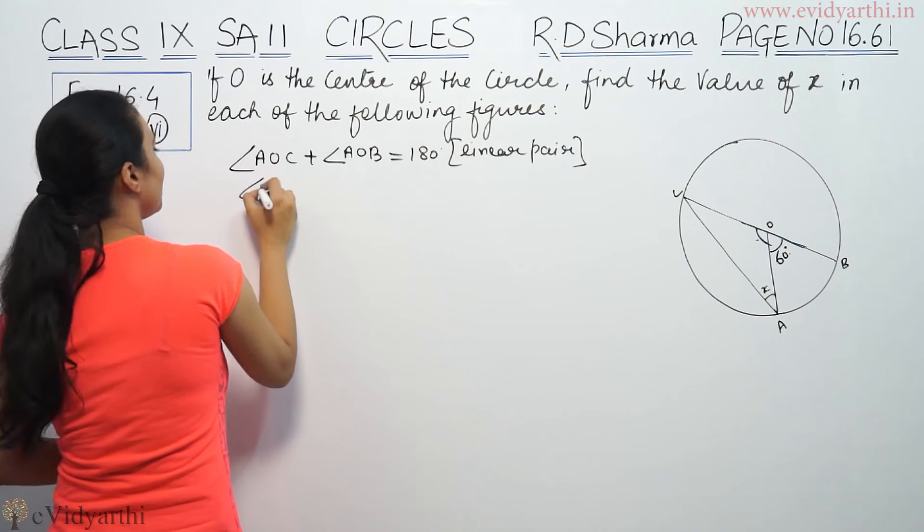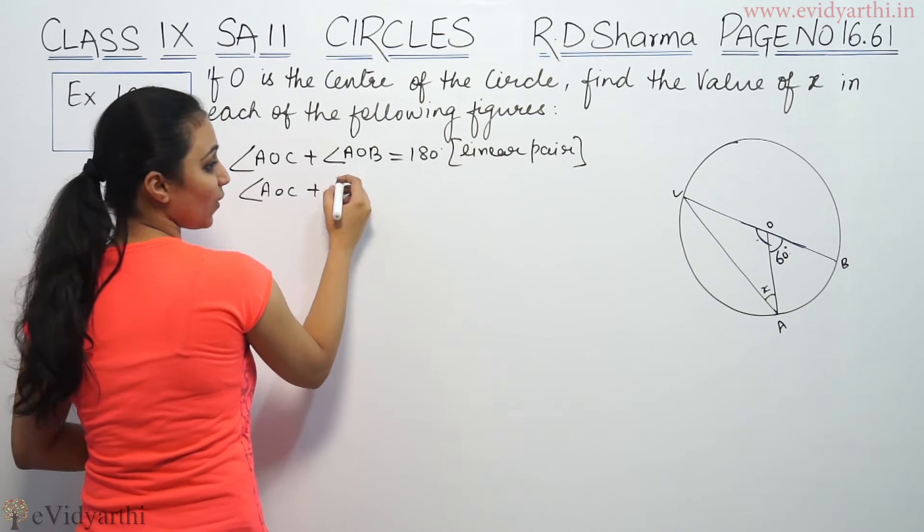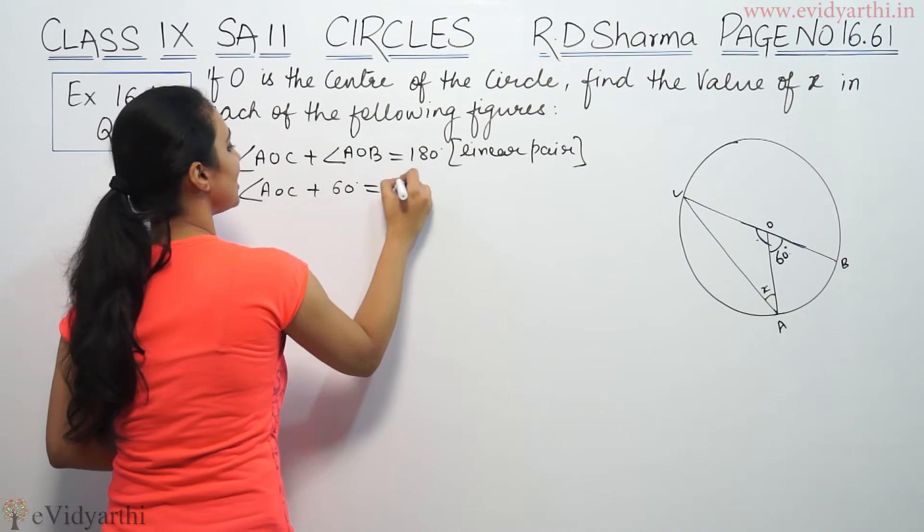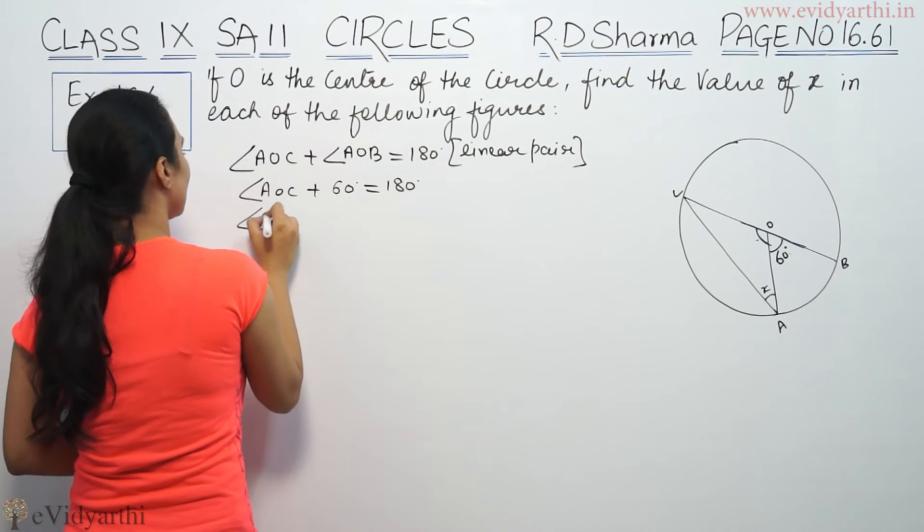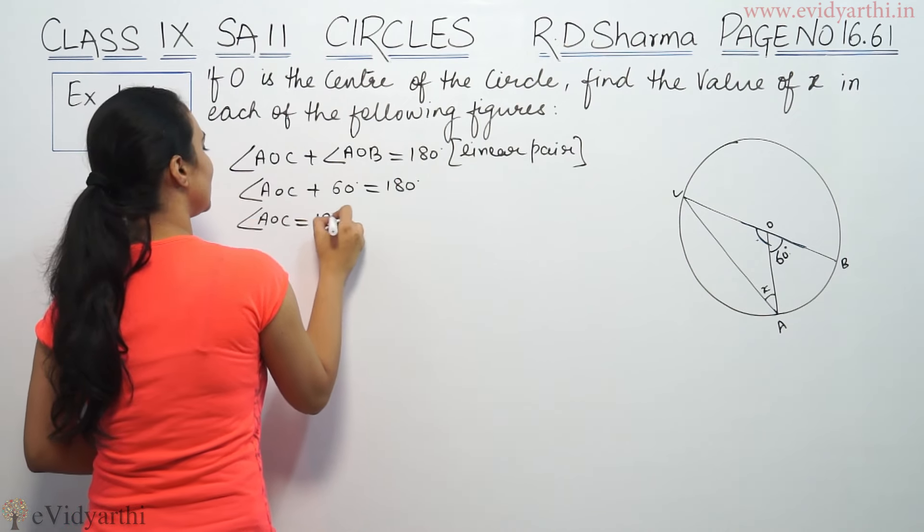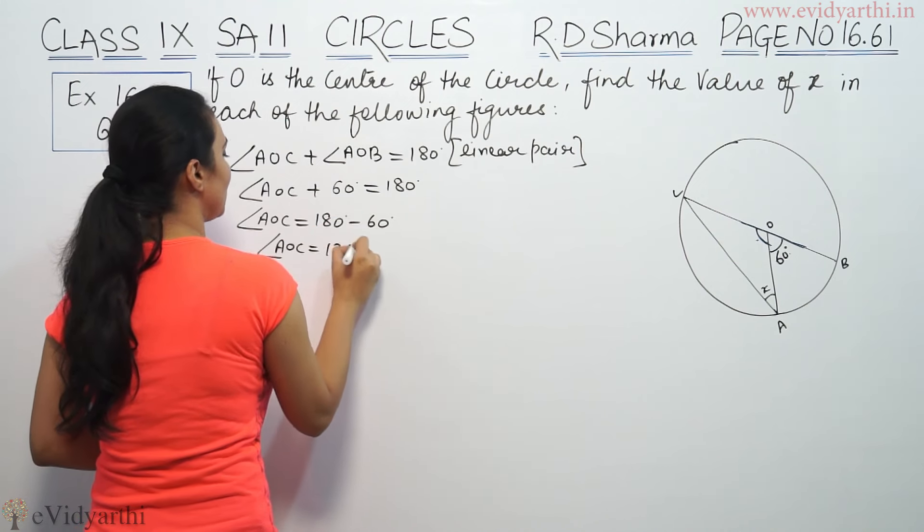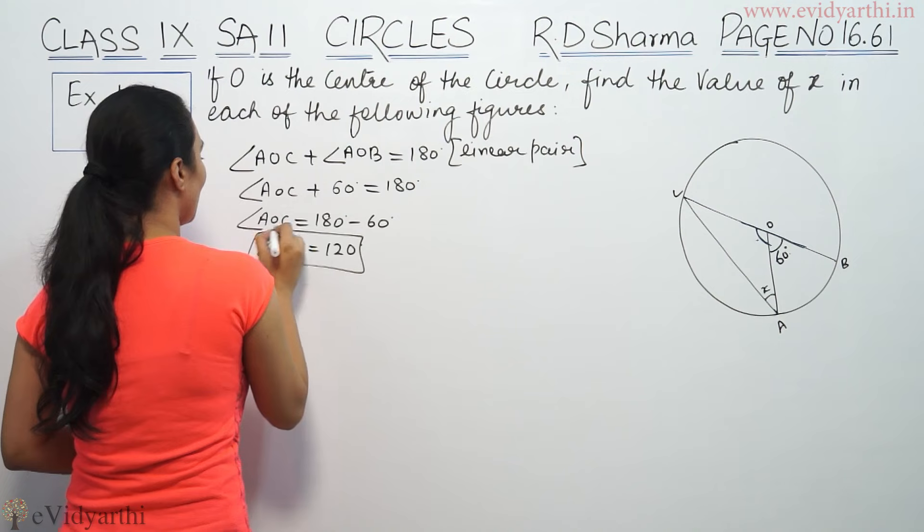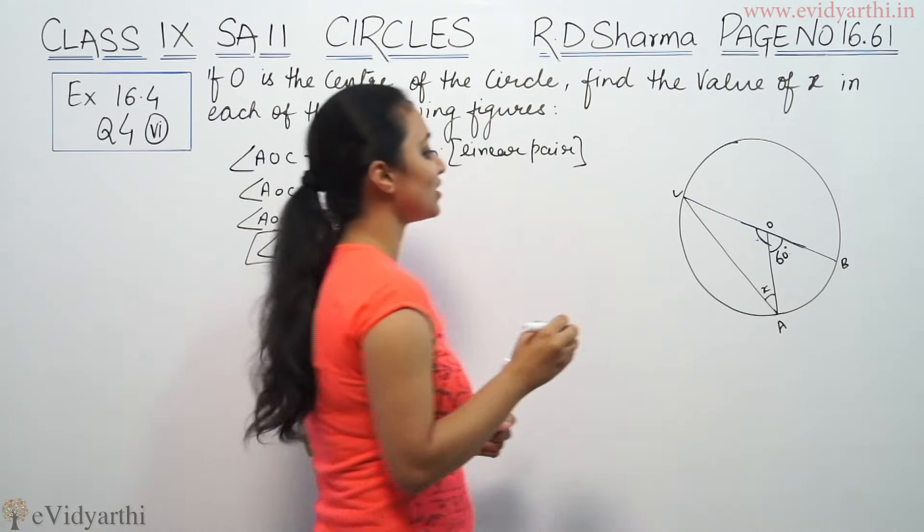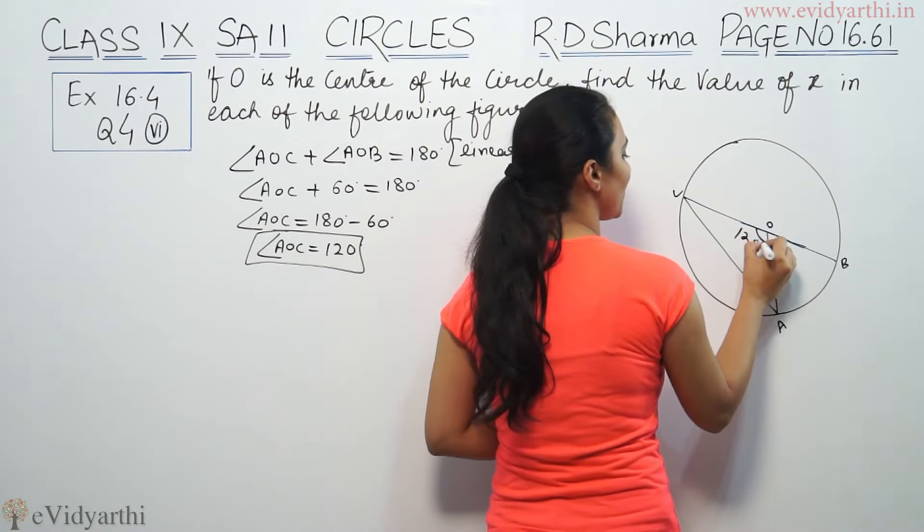So, angle AOC plus angle AOB is equal to 180 degree. Therefore, angle AOC is equal to 180 degree minus 60 degree. So, angle AOC is equal to 120 degree. This is 120 degree.